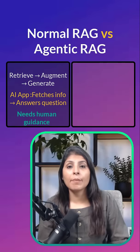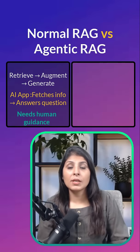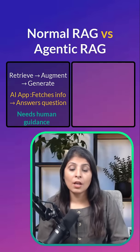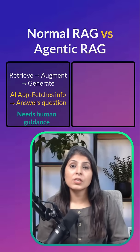This AI app is not autonomous — it cannot plan, reason, or decide which sources are best on its own.